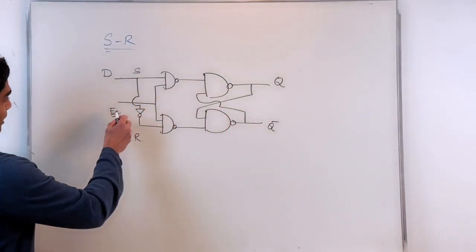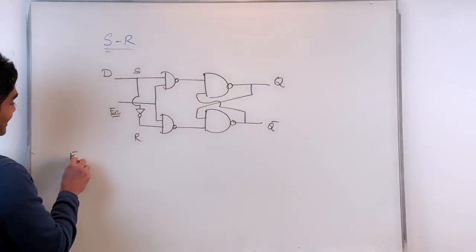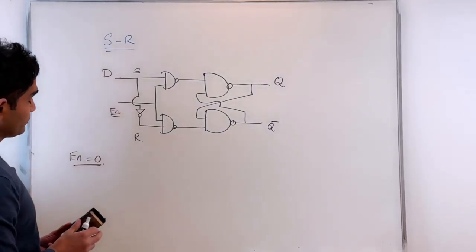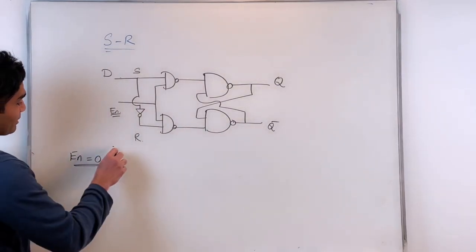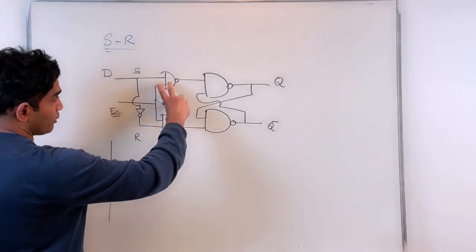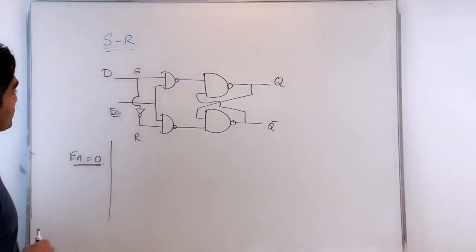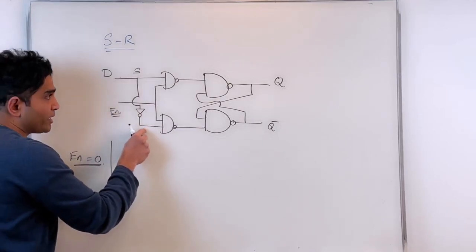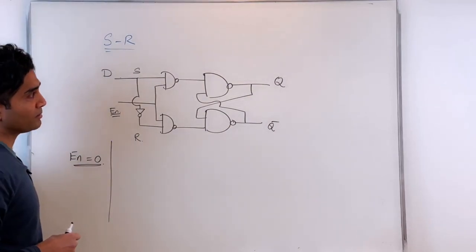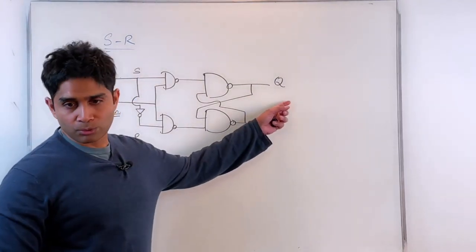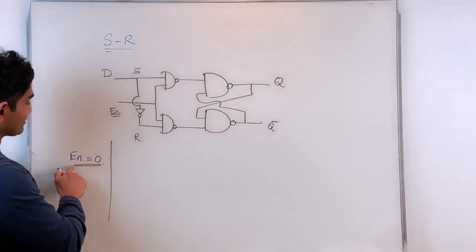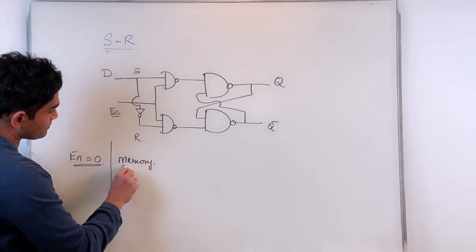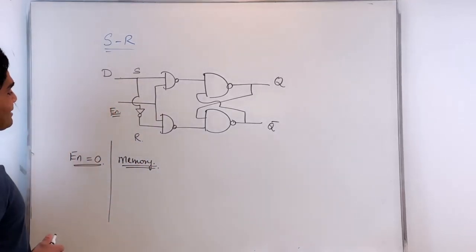What about memory? As long as my enable is 0, whatever I do for the S and R inputs does not change what is being output on the Q node. So as long as enable is 0, that constitutes a memory state. Now let's analyze this circuit.